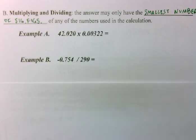Okay, let's take a look at example A. This is a multiplication problem. So, I'm going to use the rule that says that my answer may only have the smallest number of sig figs of any number that went into the calculation.